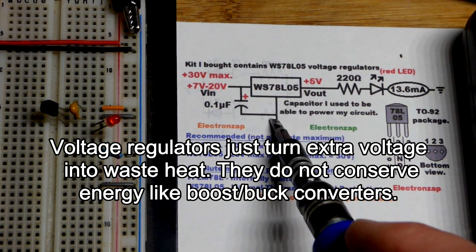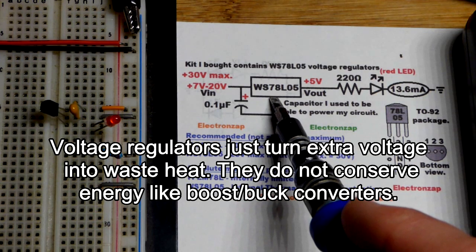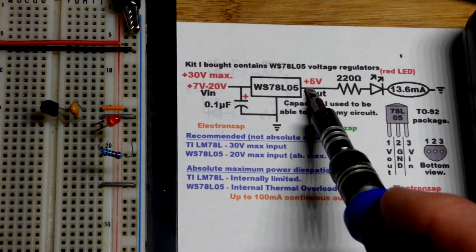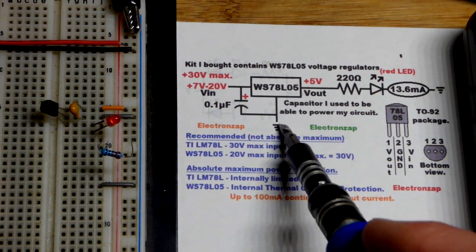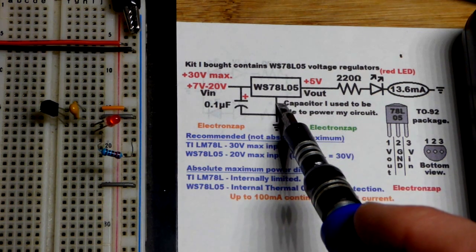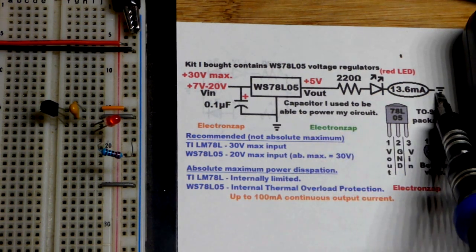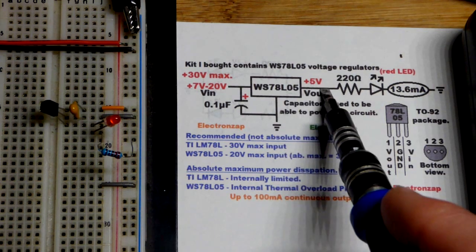It actually outputs 5 volts in relationship to the ground pin right there. So you can actually adjust it by adjusting the voltage at the ground pin, but in any case when you have ground on both sides of the load and the ground pin right there.